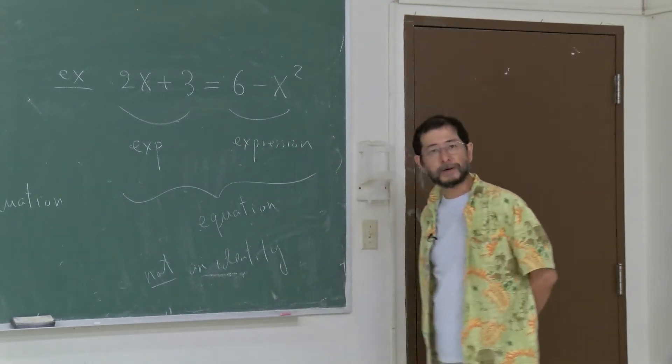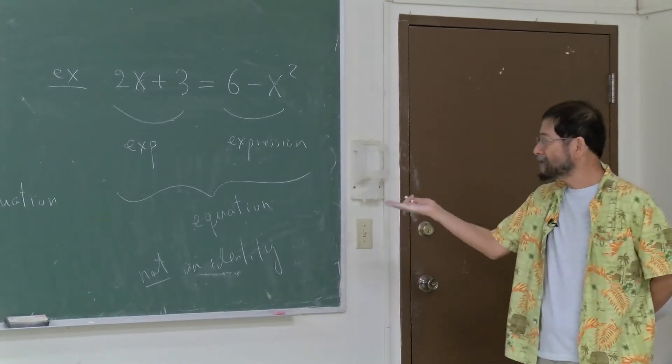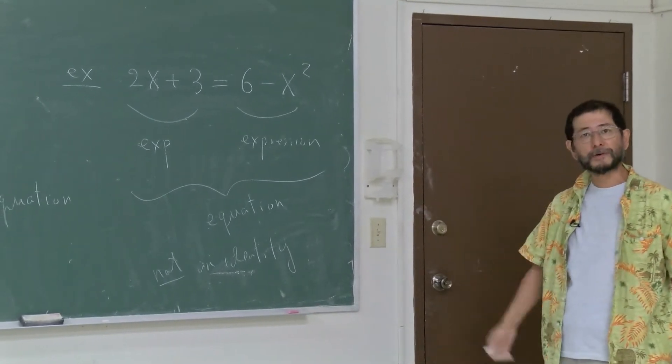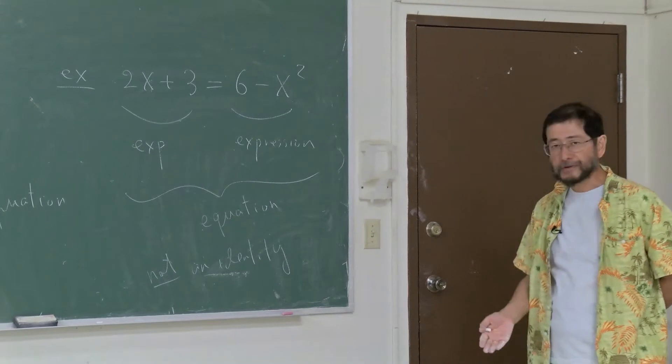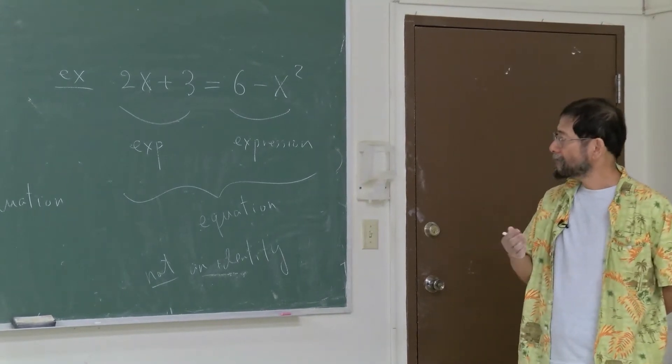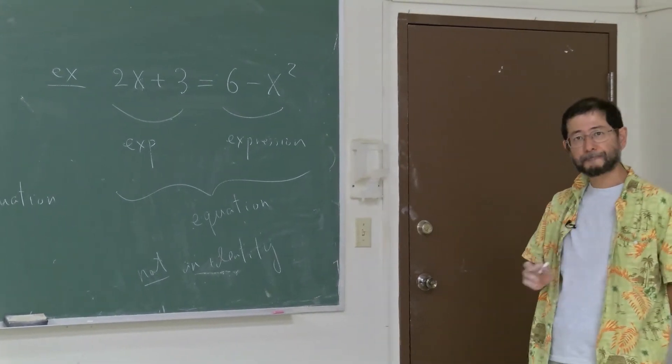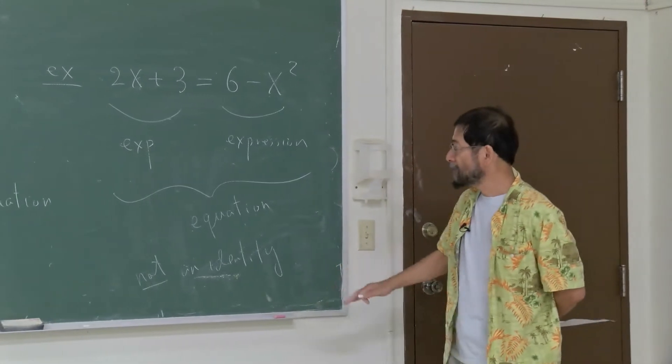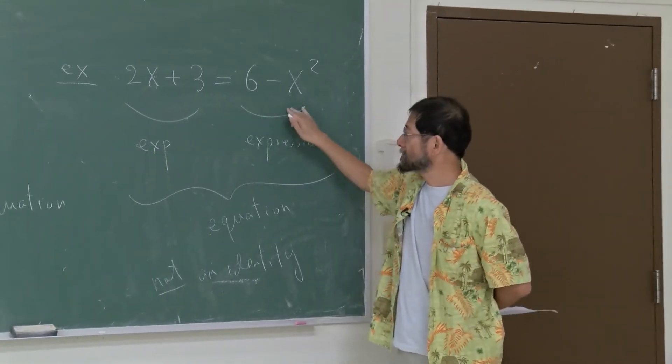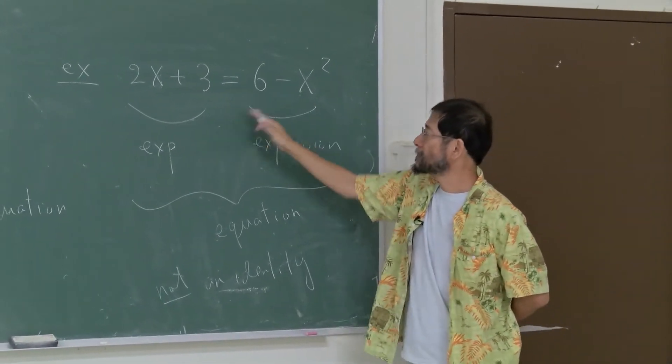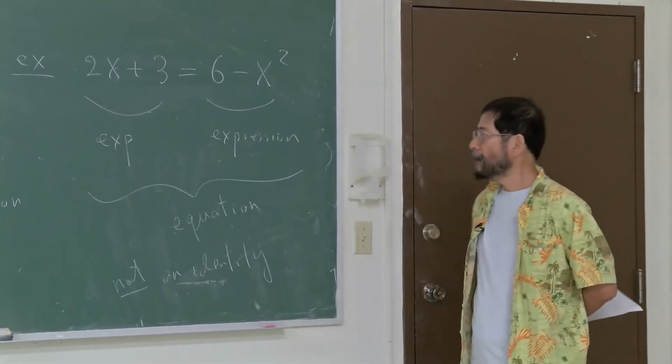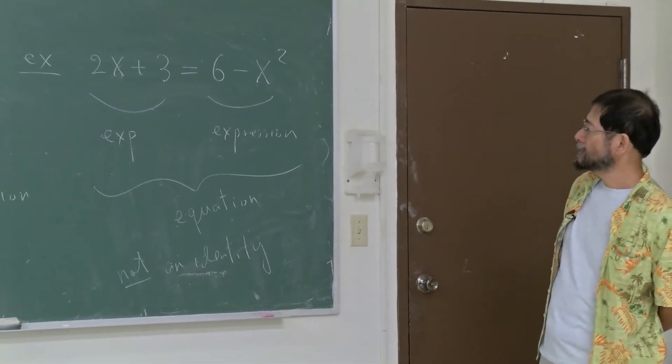So let's review how you show this is not an identity. So what do you have to do? You have to give me at least one counterexample. So you have to give me the value of x in which both sides are not equal. Any good candidate, you want to try?